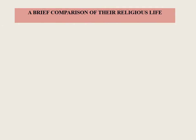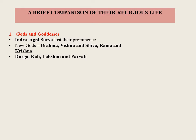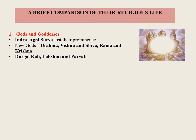A Brief Comparison of Religious Life: Significant changes took place in the religion of Aryans of the later Vedic period. The Rig Vedic gods Indra, Agni, Surya, etc. lost their prominence. New gods — Brahma, Vishnu, and Shiva — gained prominence. They believed that Prajapati or Brahma was the creator, Vishnu the preserver who helped men and gods in their distress, and Shiva was regarded as Mahadeva, the great god.